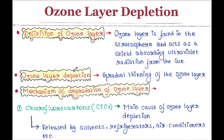Ozone layer depletion — what is that? Gradual thinning of the ozone layer is called ozone layer depletion. We will see some mechanisms of degradation of the ozone layer.